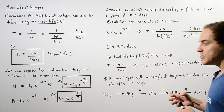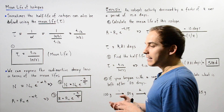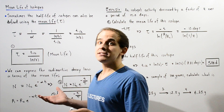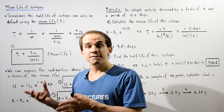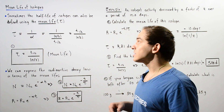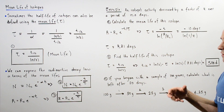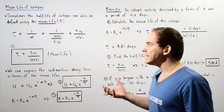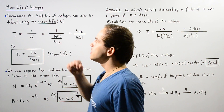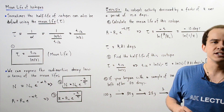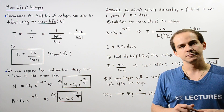So we see that in some cases it is convenient to express the half-life of an isotope in terms of the mean life, given by the Greek symbol tau.